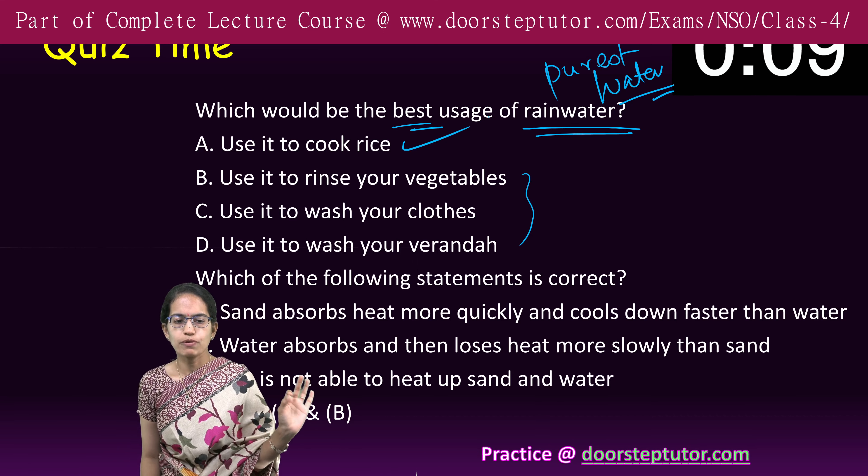So A and B are correct. The sun heats both land and water — that is also correct, but the option says 'not,' so it becomes an incorrect option. Therefore, both A and B is the right option for this question.